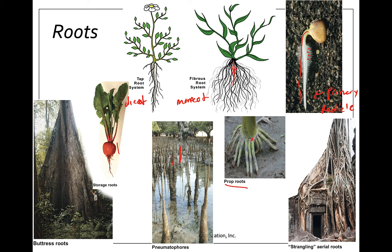Pneumatophores allow roots to do cellular respiration and make ATP in the root cells. Buttress roots grow sideways and are common in areas where the soil is really shallow but very moist — they support really tall trees in moist environments. Strangling aerial roots grow on top of another tree; the roots grow down, eventually shade out the host plant, strangle it, and take over its sunlight.